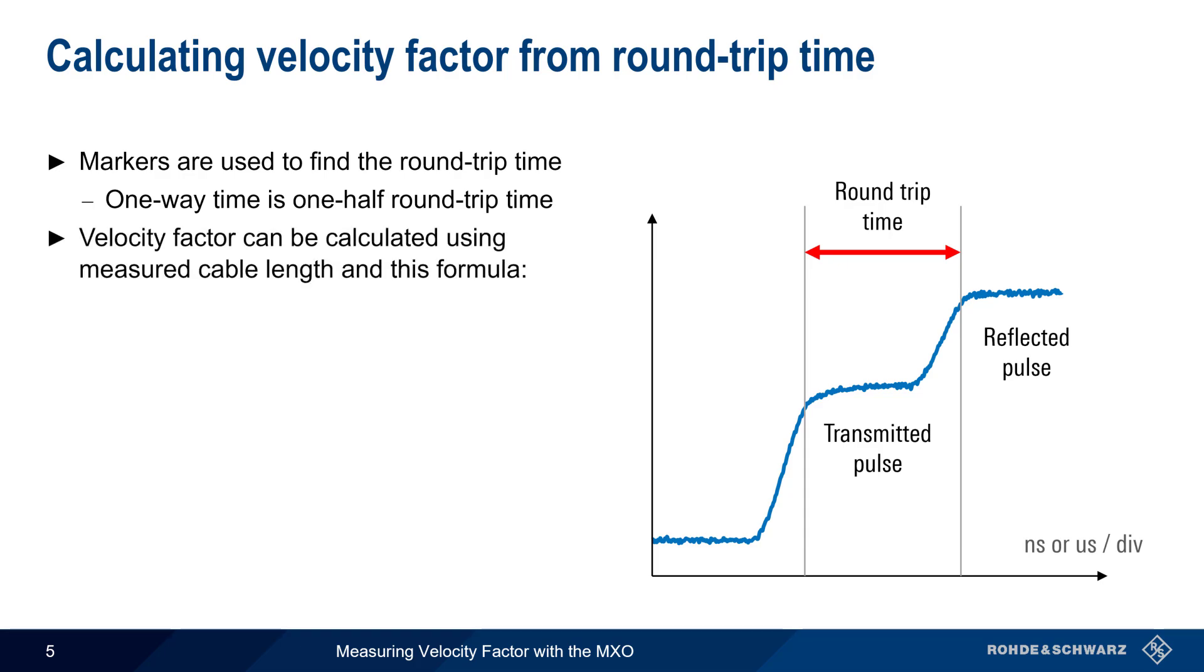Velocity factor can then be calculated using the measured or known cable length in meters, and this formula, where c is the speed of light in meters per second.